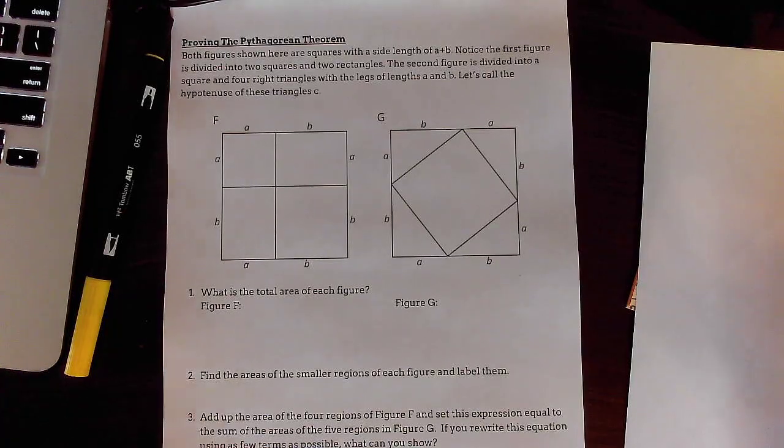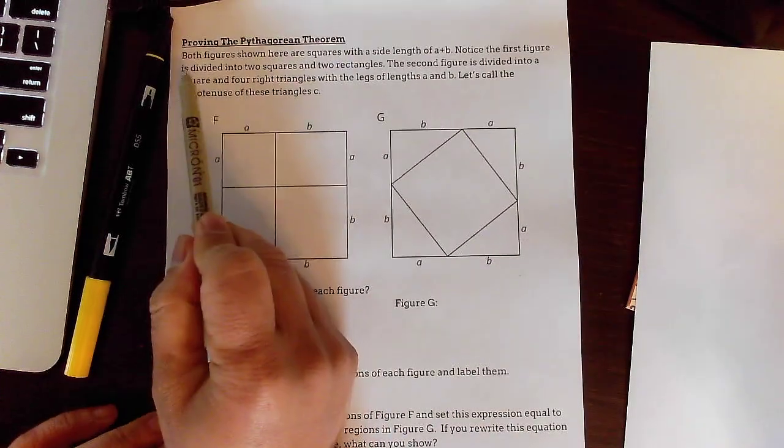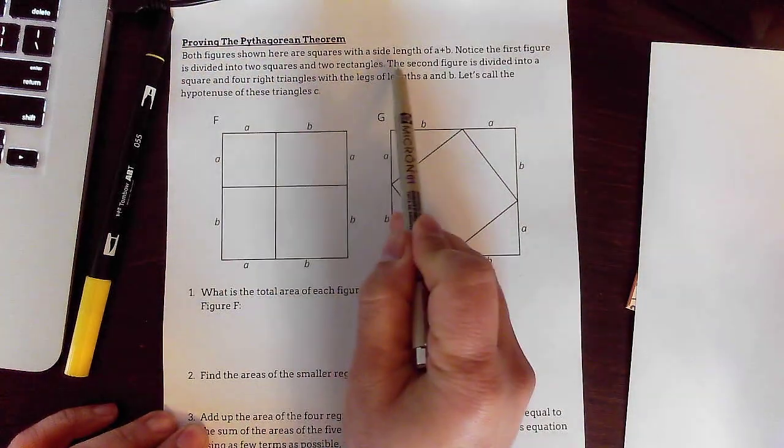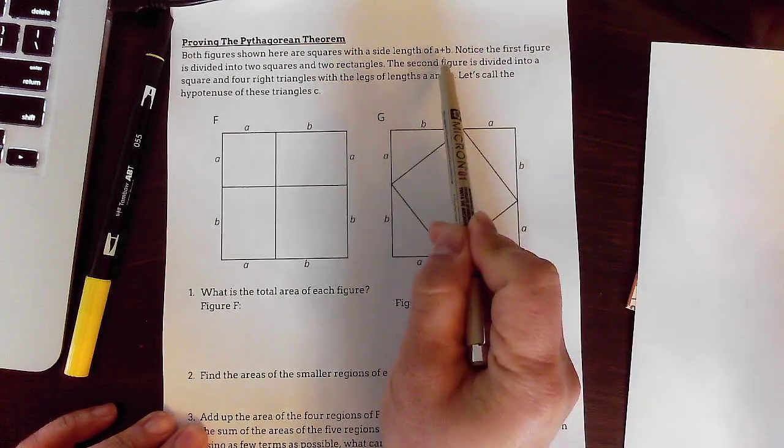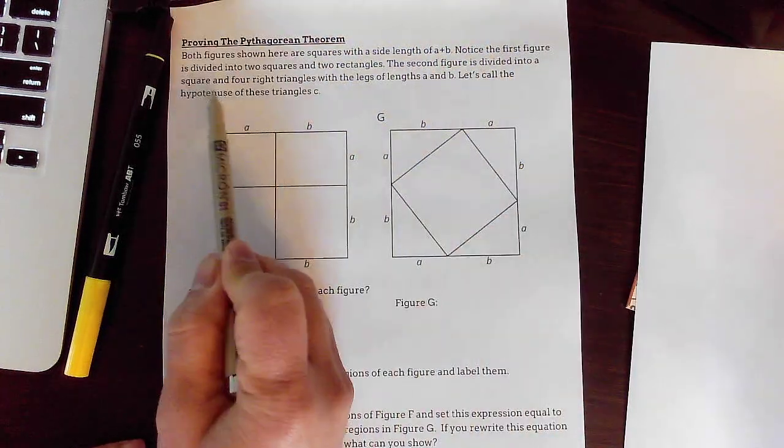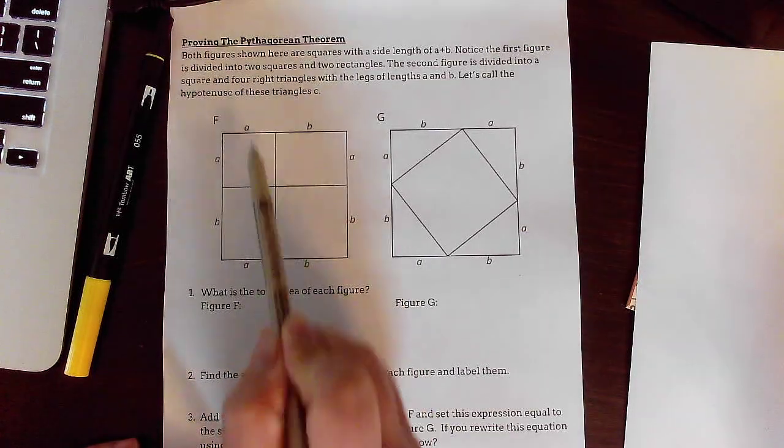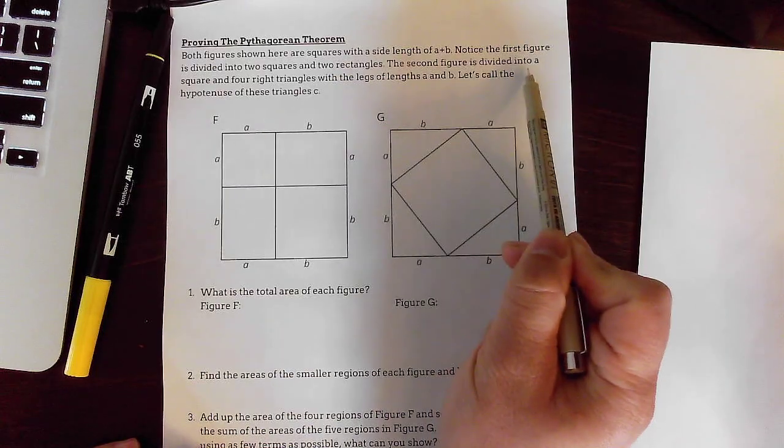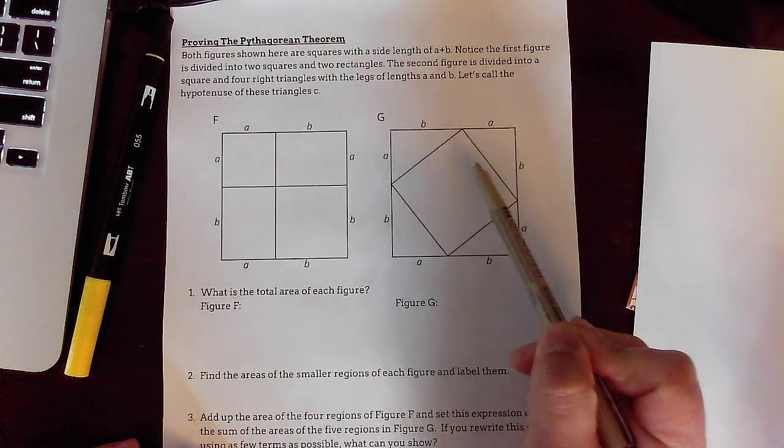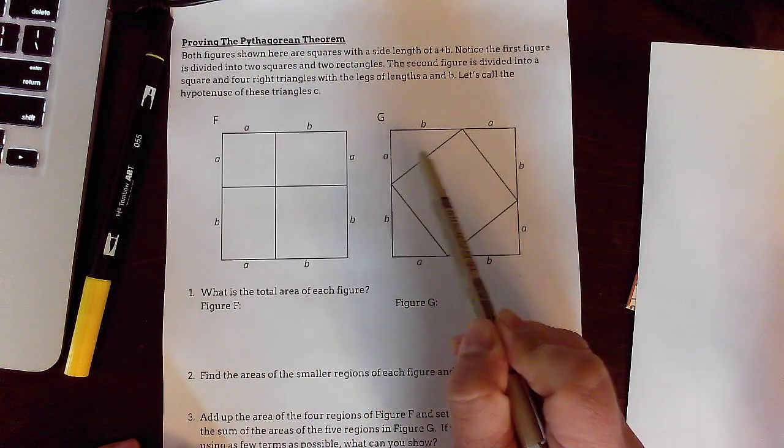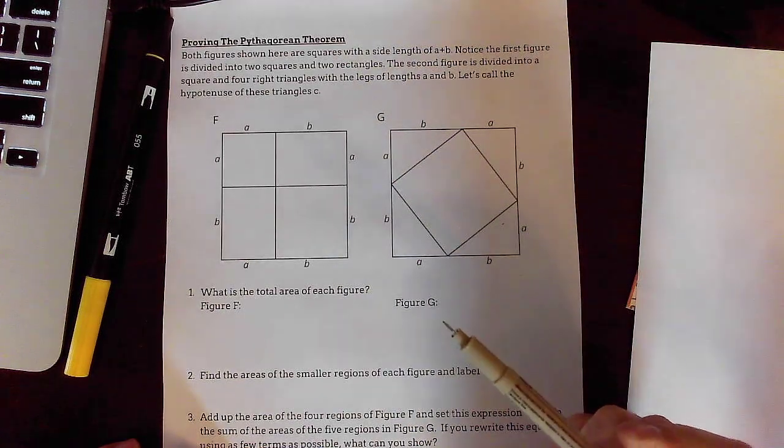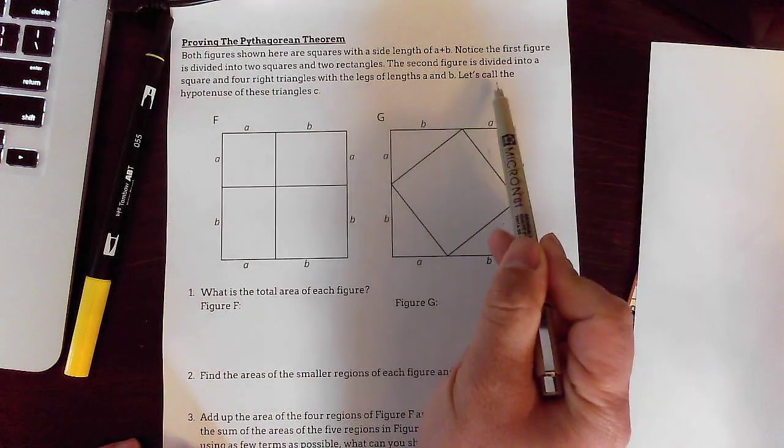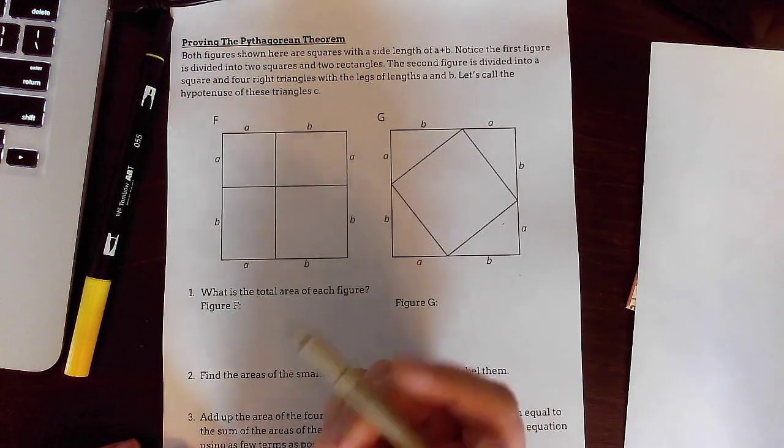I don't think I did this in my classroom. It says here, read with me. Both figures shown here are squares with the side length A plus B. Notice the first figure is divided into two squares and two rectangles. The second figure is divided into a square, one giant square and then four little triangles with the side lengths A and B. Let's call the hypotenuse of these triangles C.